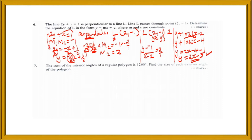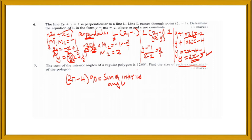Question 7: the sum of interior angles of a regular polygon is 1260 degrees. Find the size of each exterior angle of the polygon. To get the sum of interior angles of a polygon we use the formula (2n minus 4) times 90. This should equal 1260 degrees.